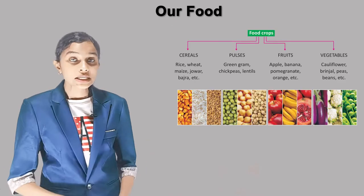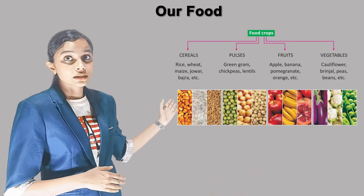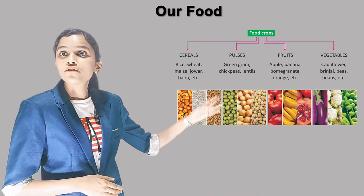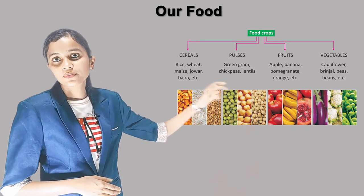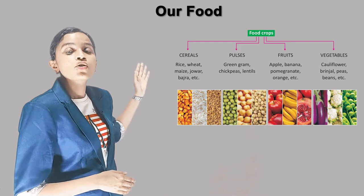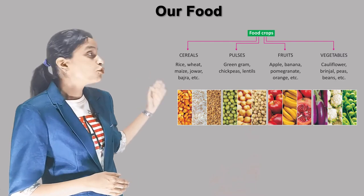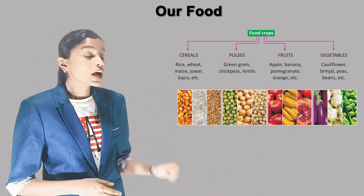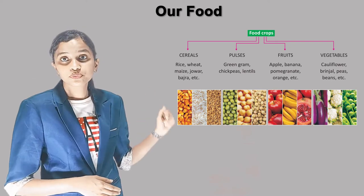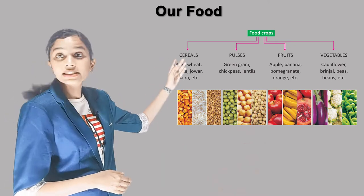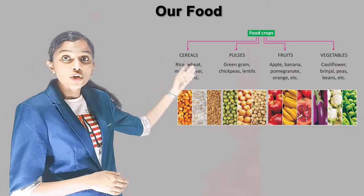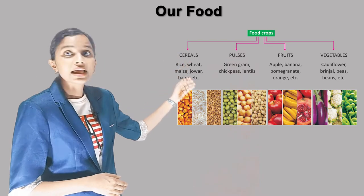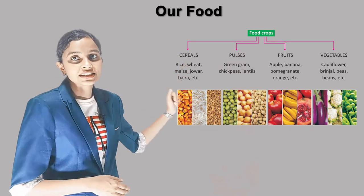Food crops include cereals, pulses, fruits, and vegetables. Cereals are rice, wheat, maize, jowar, bajra, etc. Pulses are green gram, chickpeas, and lentils.